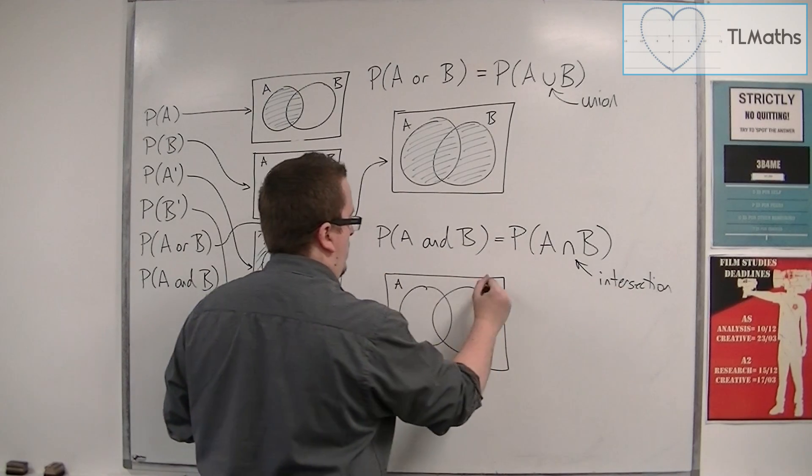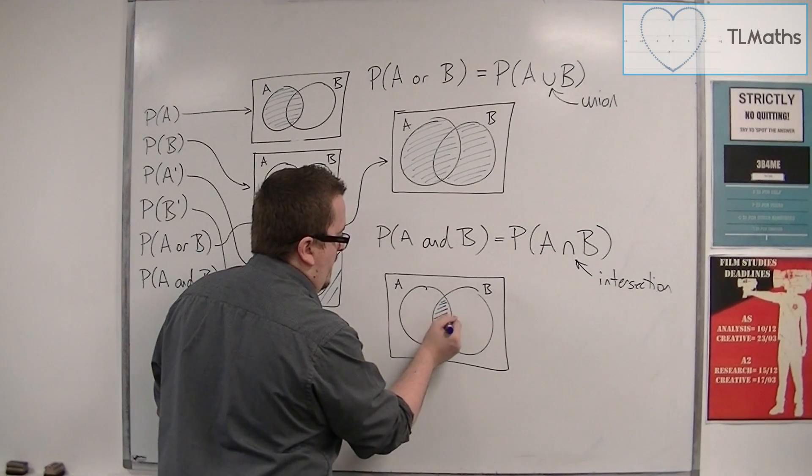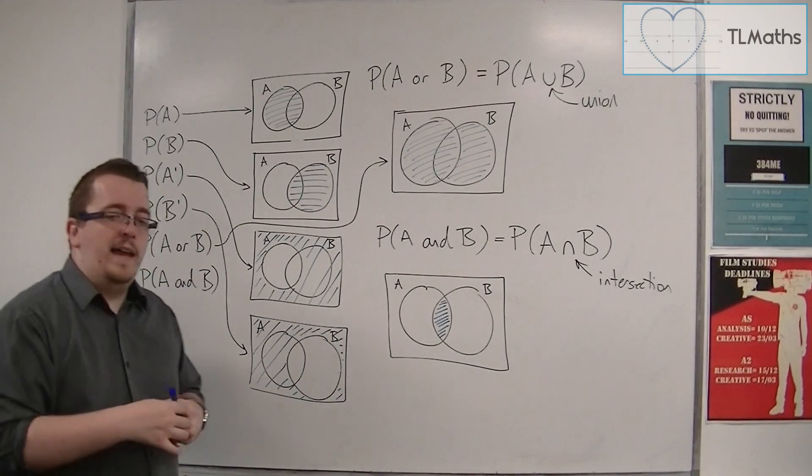So A, B, and the intersection is just that bit there. So that is the intersection of A and B.